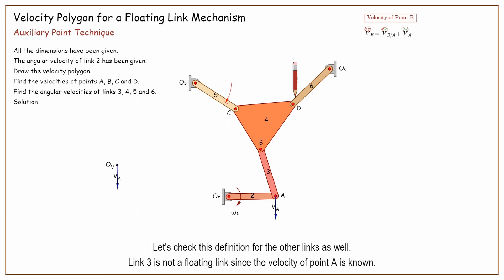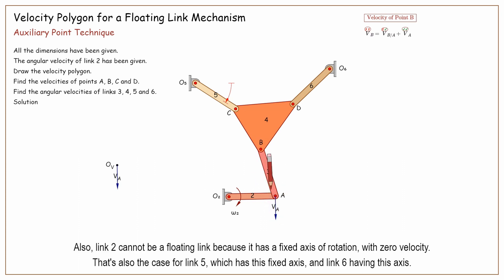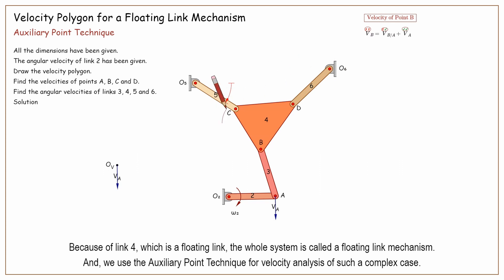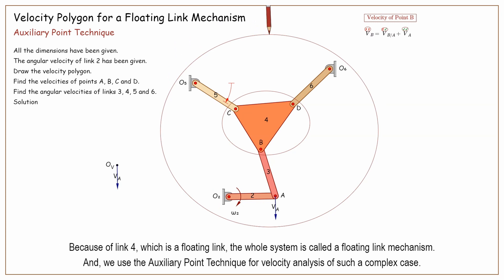Let's check this definition for the other links as well. Link 3 is not a floating link, since the velocity of point A is known. Also, link 2 cannot be a floating link, because it has a fixed axis of rotation with zero velocity. That's also the case for link 5, which has a fixed axis, and link 6, having this axis. Because of link 4, which is a floating link, the whole system is called a floating link mechanism. And we use the auxiliary point technique for velocity analysis of such a complex case.